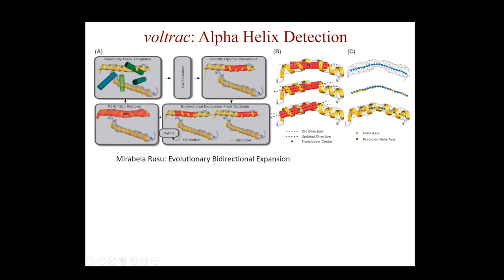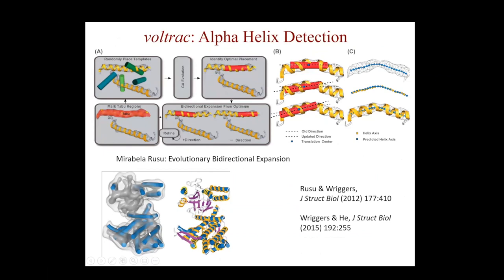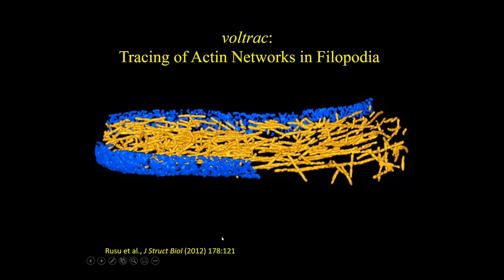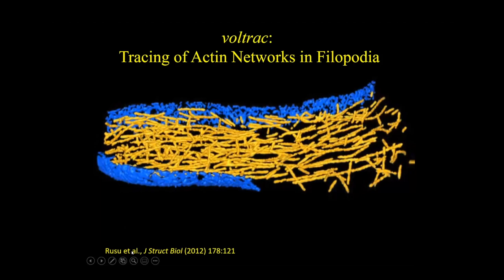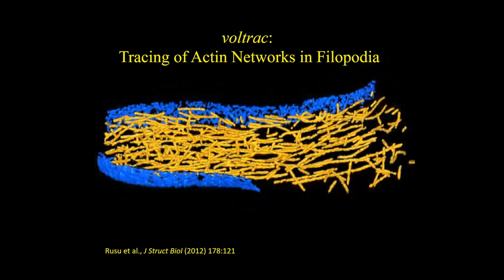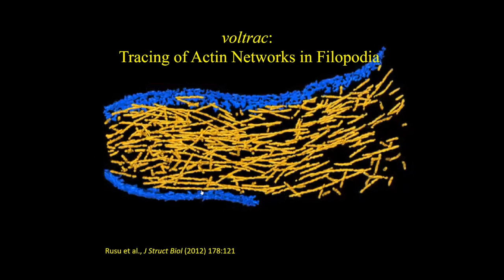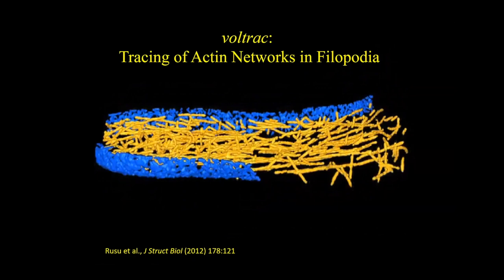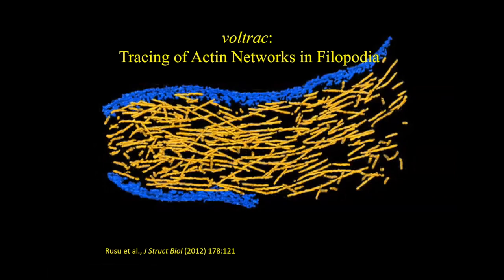Another tool recently introduced is WorldTrack, which performs alpha helix detection. It finds cylinder-like templates in a volume, performs a bi-directional search, and finds central helical axes. We can identify alpha helices in EM maps and perform secondary structure prediction at intermediate resolution of 5 to 8 angstrom, where you can see and detect alpha helices. WorldTrack is also very useful for tracing actin networks in filopodia — in tomograms we're looking at actin networks in cells and tracing them. It can trace alpha helices but also filaments in tomograms.